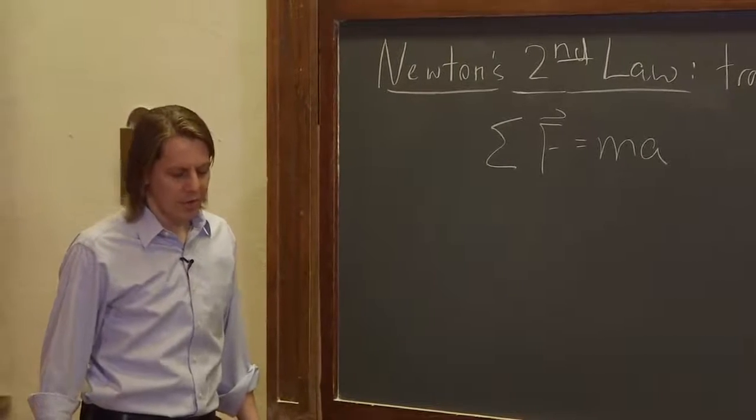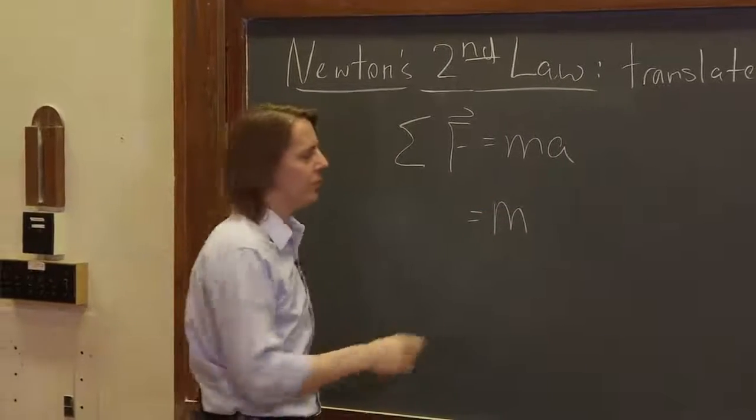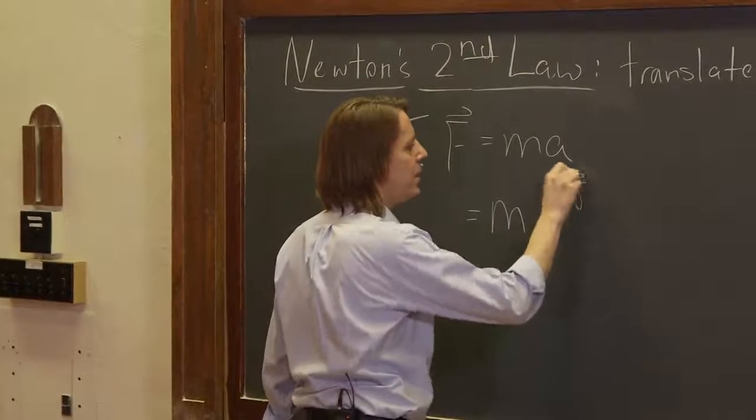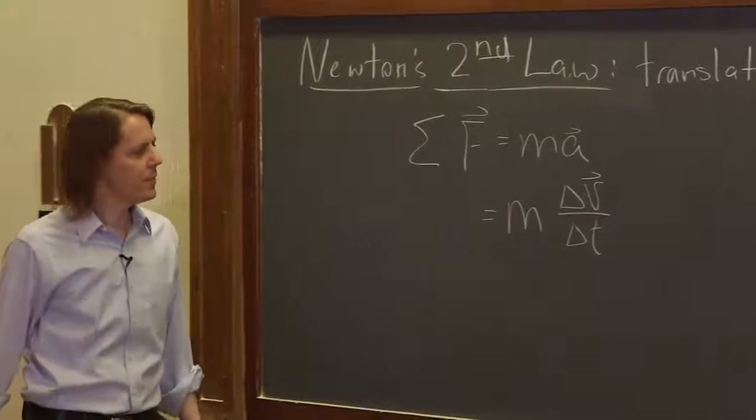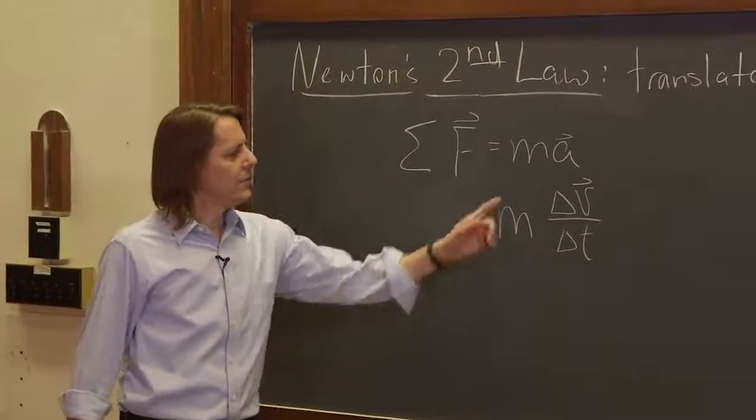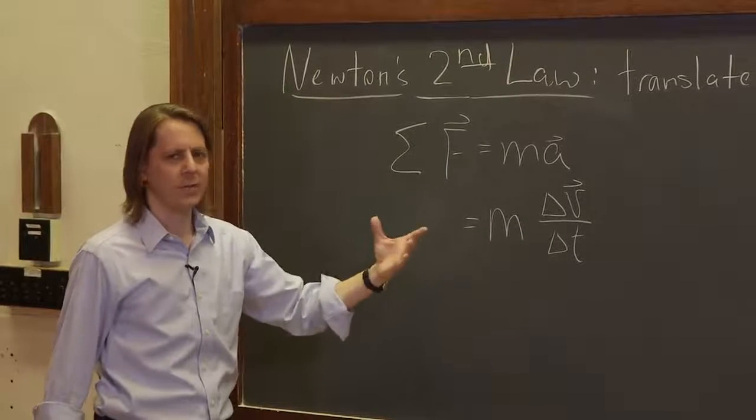But let's see what we can do with that. We could say that's equal to mass, and we now know what acceleration is. It's the change in velocity over the change in time. This is a change in velocity, the final velocity minus the initial velocity, subtracted as vectors.